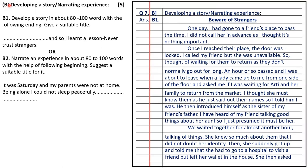Question 7B is developing a story or narrating an experience. B1: develop a story in about 80 to 100 words with the following ending and give it a suitable title. The ending is given, so you have to develop a story accordingly where that ending line is the last line.